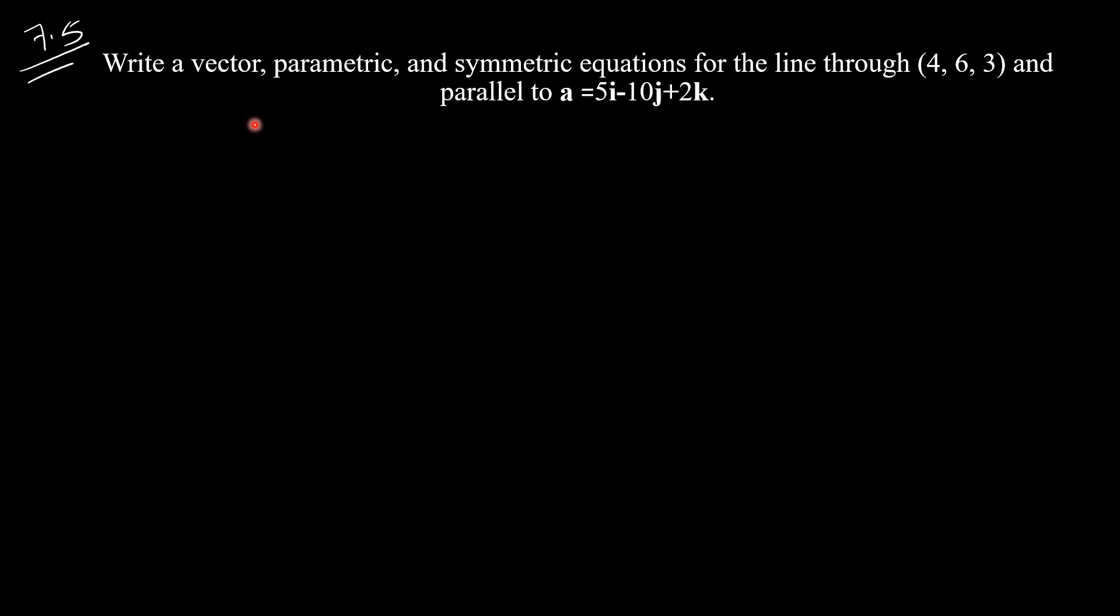Here it says to find a vector, parametric, and symmetric equation for the line passing through this point and parallel to vector A. We're given the vector A, so we don't need to find it. Before, we were given two points and had to find vector A by subtracting. Here we're already given that.